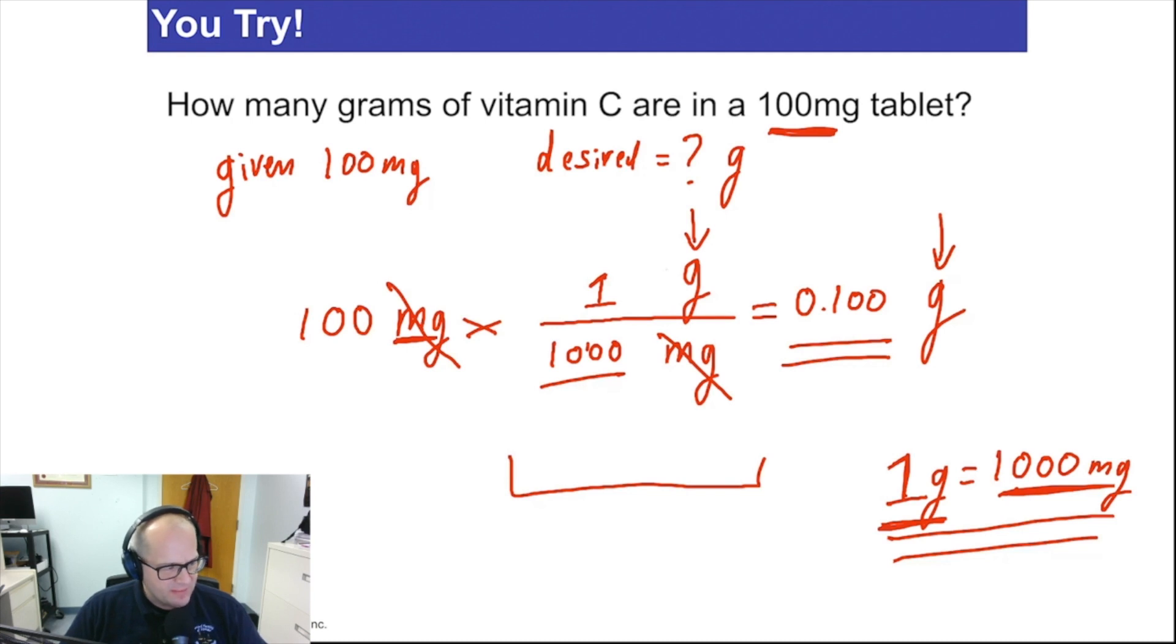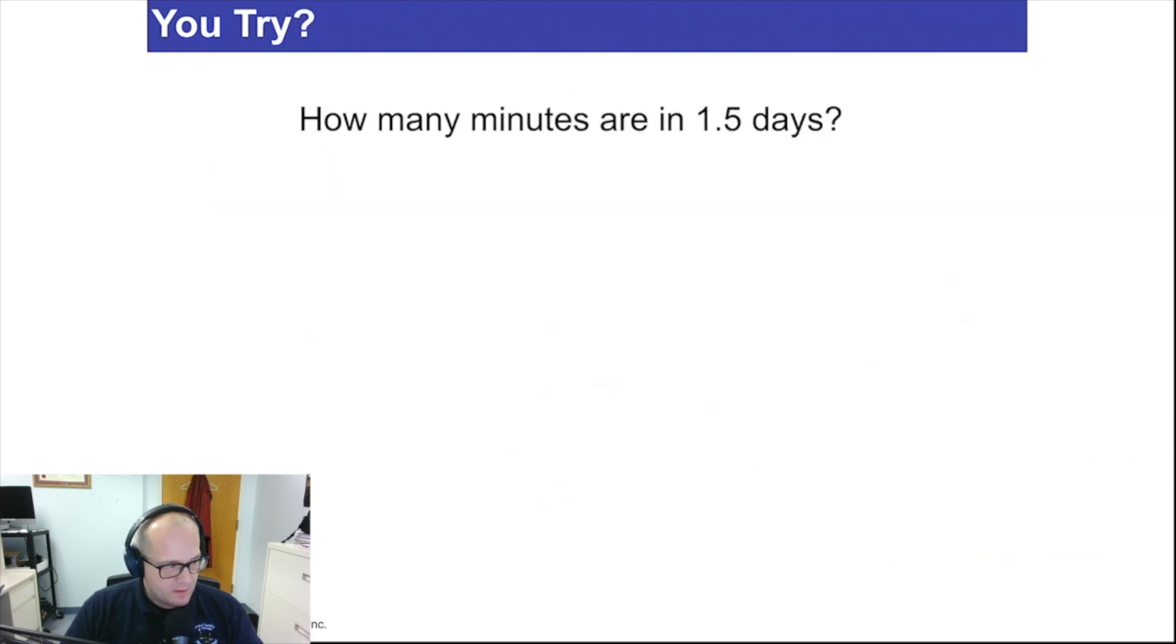Now, I know a lot of you are thinking that's a lot of work for a simple question. Yes, this is a lot of work for a simple question like this. But guess what? I didn't get it wrong. I see so many times people do this in their head. Oh, so easy, throw an answer down. The answer is completely wrong, and they get zero. Do the work, do the due diligence, and you'll never be wrong. You'll be happier for it. Another example. How many minutes are in 1.5 days?